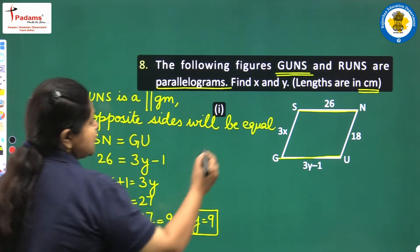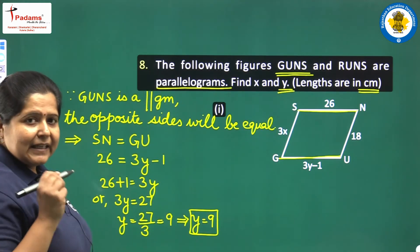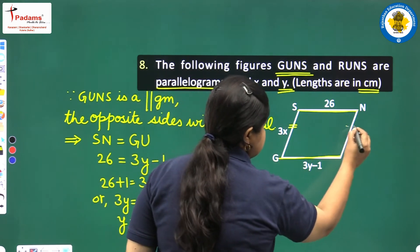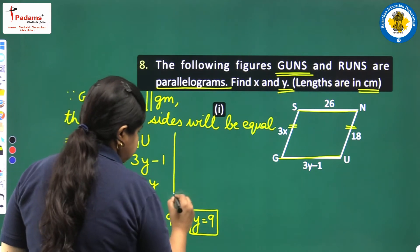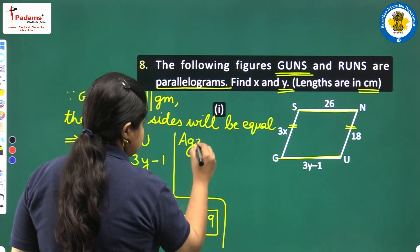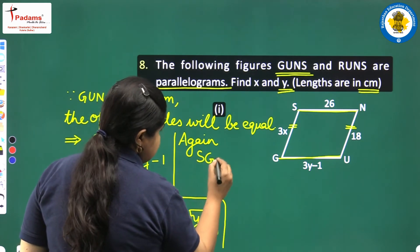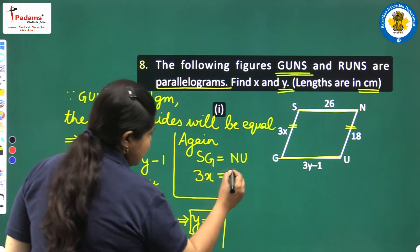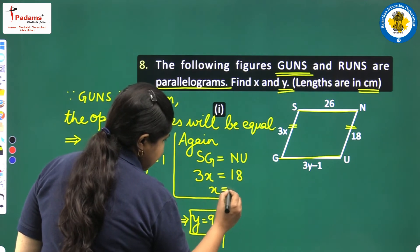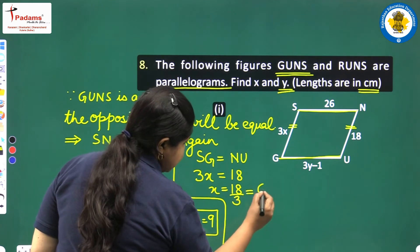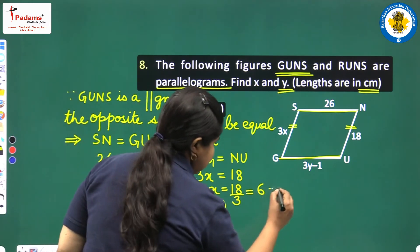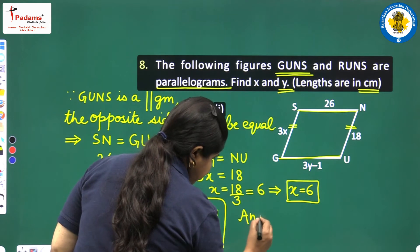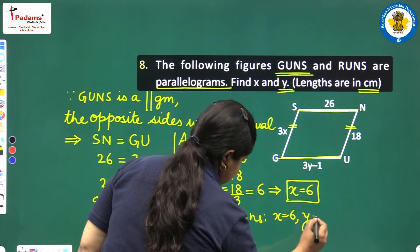We have found y. Now for x, we equate the other pair of opposite sides: SG = NU. SG is 3x and NU is 18. This gives x = 18 ÷ 3 = 6. The final answers are x = 6 and y = 9.